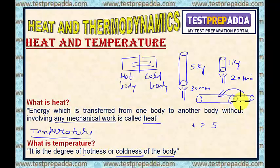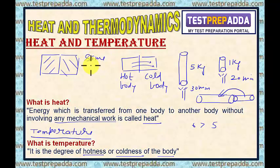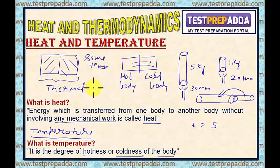The concept is clear: heat flows from the body at higher temperature to the body at lower temperature. Now, if we keep two bodies in contact and there is no heat transfer between them, we can conclude that the two bodies have the same temperature — and then these two bodies are said to be in thermal equilibrium. So if bodies A and B are in thermal equilibrium, they have the same temperature.